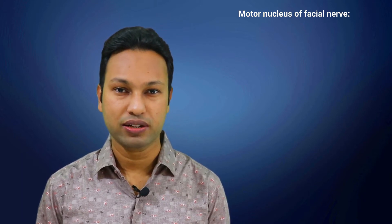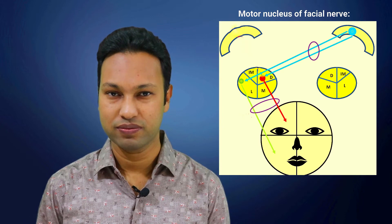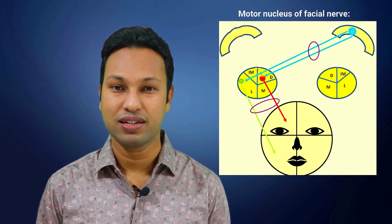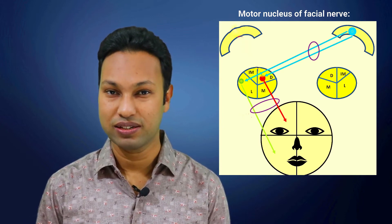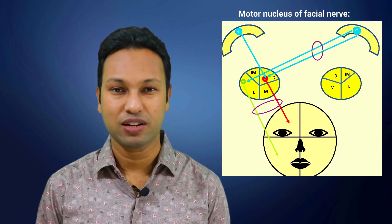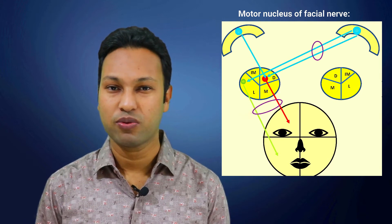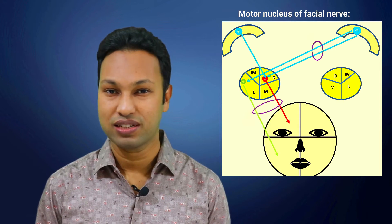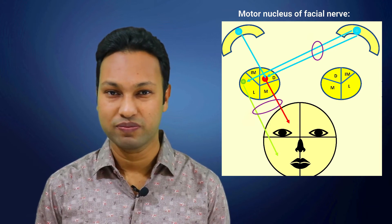Both the supranucleus and infranucleus get nerve fibers from the contralateral precentral gyrus of the brain. But the supranucleus is lucky because it also gets additional nerve supply from the ipsilateral precentral gyrus of the brain.